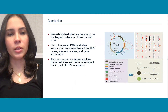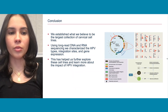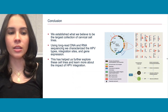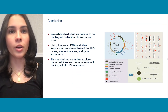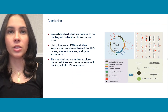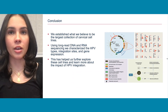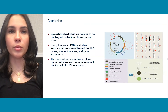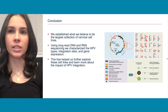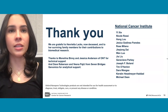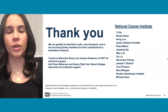In conclusion, we established what we believe to be the largest collection of cervical cell lines, and using long-read DNA and RNA sequencing, we characterized the HPV types, integration sites, and gene expression. This helped us further explore these cell lines and learn more about the impact of HPV integration. We are currently testing targeted therapeutic agents in activated immune cells, and have isolated RNA and DNA from cervical precancers and cancerous FFPE tissue, and plan to run a cervical panel on the MinION NanoString. We hope that with this research, we are able to change the approach to HPV treatment and allow it to become specific by HPV type. Thank you all for your time, and I'd like to thank everybody in my lab who worked on this project, along with all of our collaborators.